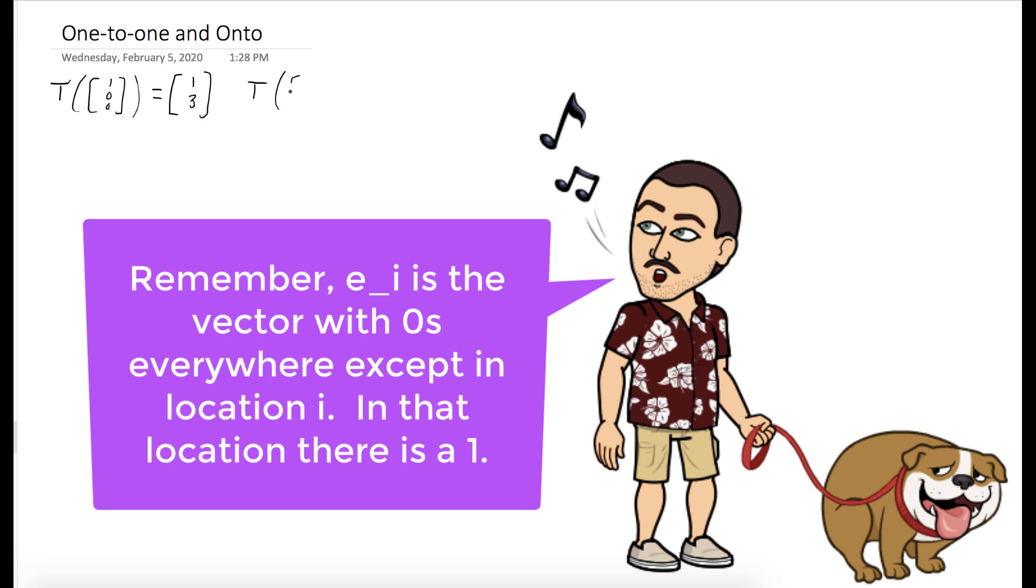Now, E1 is the vector that has a 1 in the first position and 0 everywhere else. E2 is the vector that has a 1 in the second position and 0 everywhere else. And E3 is the vector that has a 1 in the third position and 0 everywhere else.